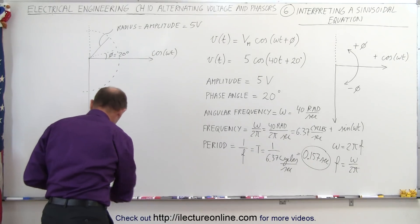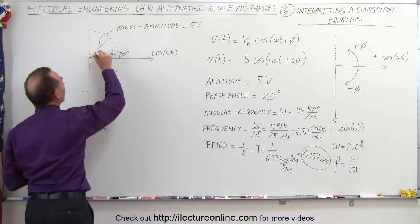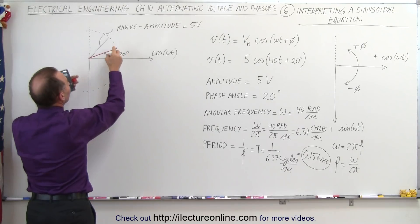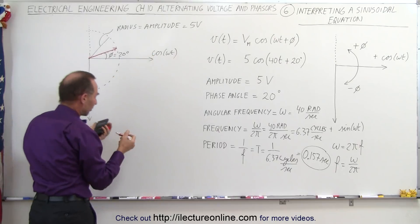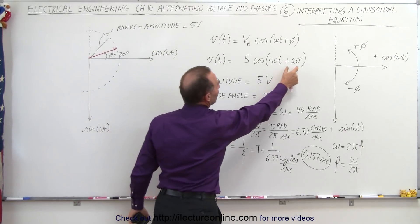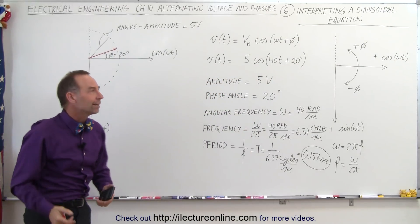So if we're going to draw that, that would be represented by this. So the length of this vector here, that's equal to 5 volts. The direction is 20 degrees above the cosine of omega function, and that will then properly represent the phase angle and the amplitude.